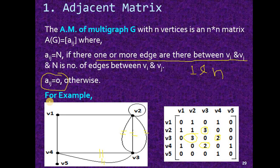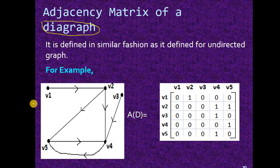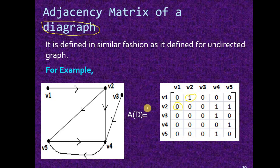These two representations are for undirected graphs. Suppose there is a directional graph — a digraph. It is defined in a similar fashion; we only have to consider the direction of the edge. For v1 to v1, no edge, so we write 0. For v1 to v2, an edge is present, so we write 1. For v2 to v1, because the direction is reverse, we write 0. In this way, checking the direction of each edge, we can calculate our adjacency matrix.